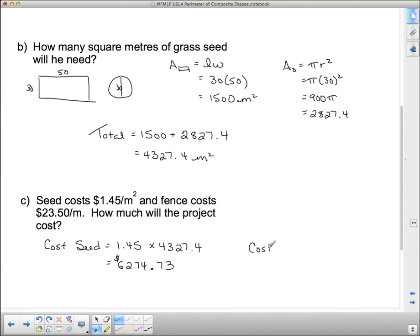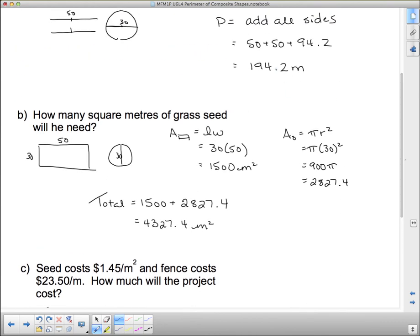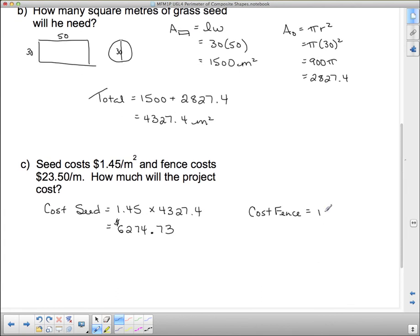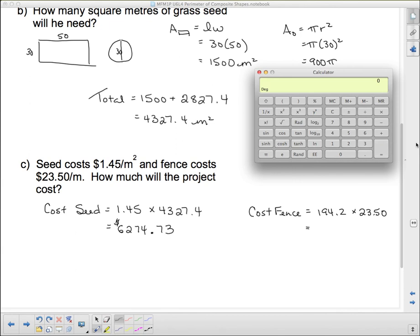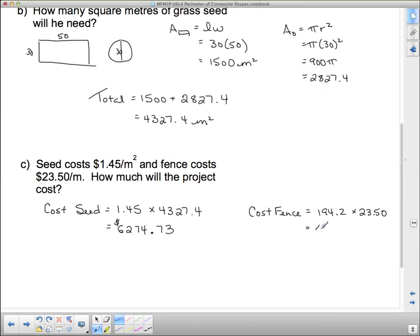So the cost of the fence, remember the fence was the distance around, and we found out that that was 194.2 meters, but each one of those meters is going to cost me $23. So I have to multiply that by $23.50. So let's pull out our calculator again. 194.2 times 23.50 equals $4,563.70.